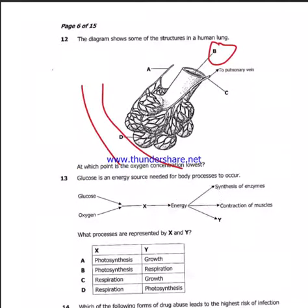Question 13: Glucose is an energy source needed for body processes to occur. Now they are saying body processes. Glucose plus oxygen combining through respiration. So you can see C and D, I have got respiration there. After this energy has been released, this energy is used for what? They are saying for synthesis, contraction of muscles, is it for respiration again? Remember I have got respiration, is it for growth or photosynthesis? This energy is not used for photosynthesis, no, but it is used for growth. And our answer there is C.